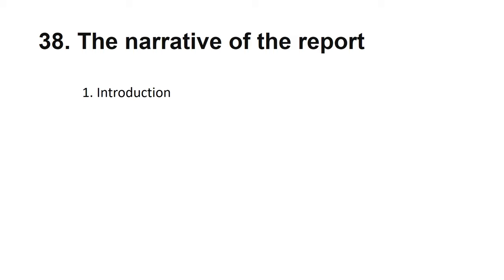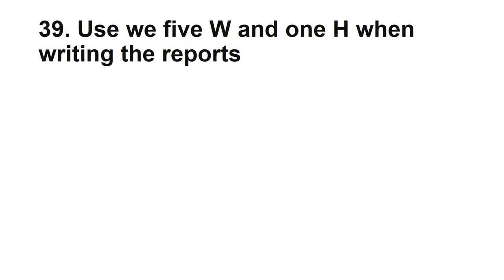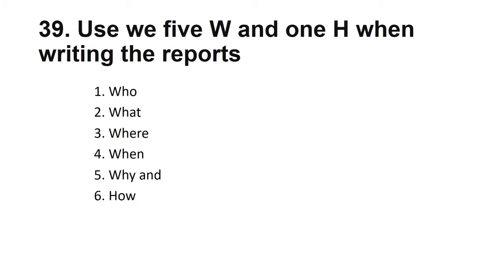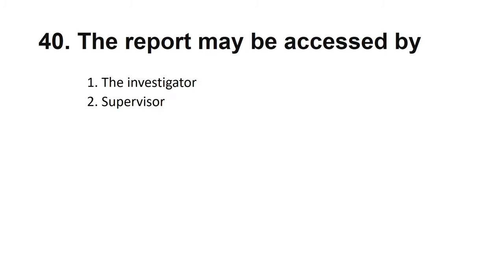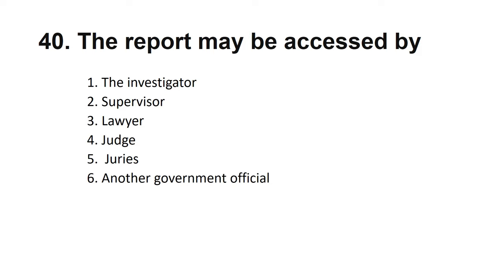The narrative of the report has three parts: introduction, body, and summary. When writing the report, we use the five W's and one H: who, what, where, when, why, and how. The report may be accessed by: investigators, supervisors, lawyers, judges, juries, other government officials, insurance companies, media, and others. That is why your report should be based on fact, not assumption.